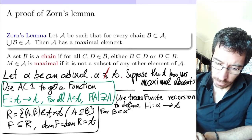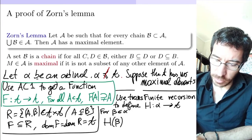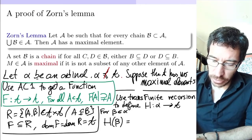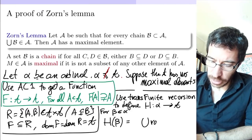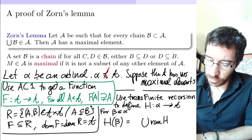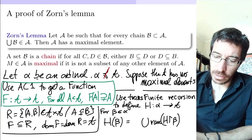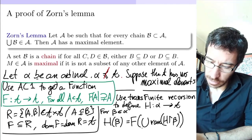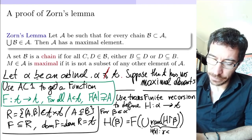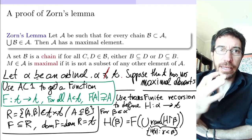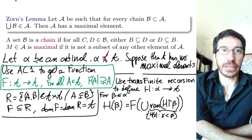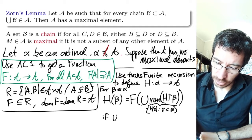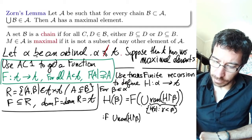For beta in alpha, we want H(beta) to be something that properly extends all the previous ones. So we take the union of the range of H up to beta — considering all the previous ones, taking the union — and then applying F, which gives a proper superset. This is for the case when the union of the range of H up to beta belongs to the collection.